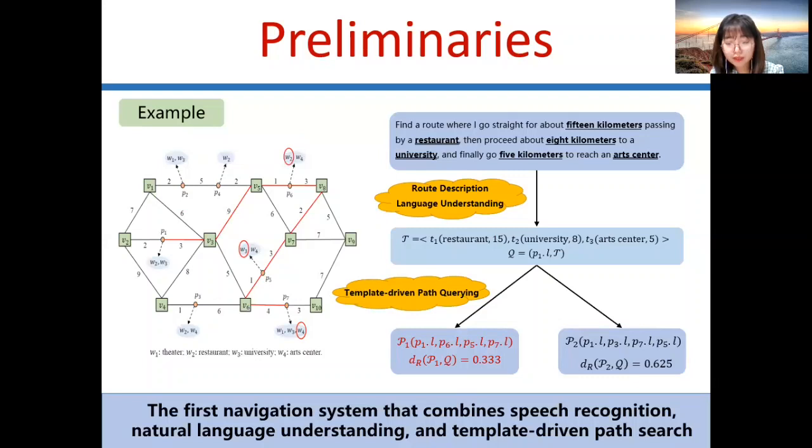The first path starts from P1 and passes by P6, P5, and P7. The second path starts from P1 and passes by P3, P7, and P5. The candidate path P1 with the smallest route template distance is the final result.